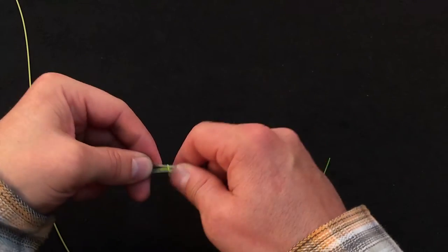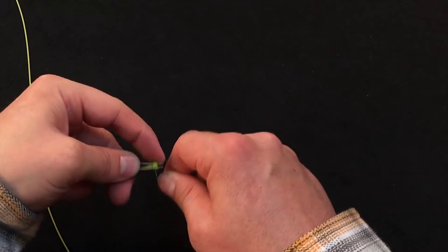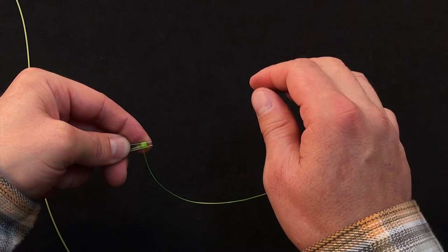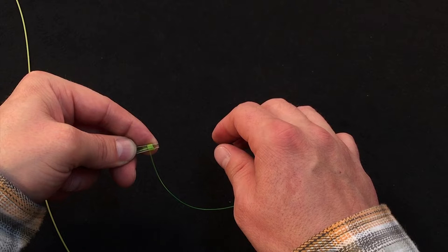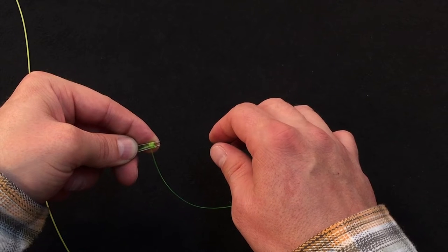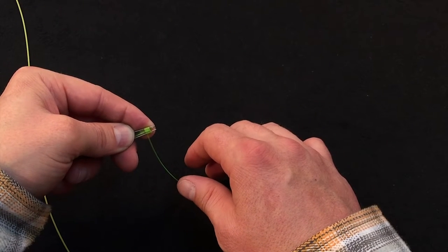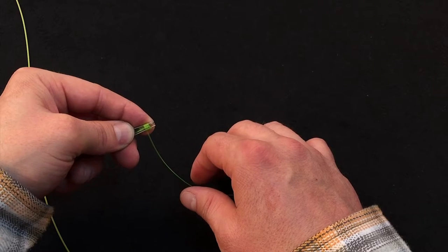Then we'll take and wrap four, maybe five loops around the TyFast tool. We don't want to use any more than four or five loops, because too much mass on the end of a floating line will sink it. So that's why four or five loops is about the perfect balance.